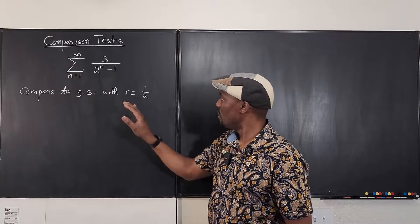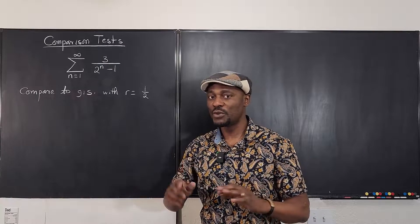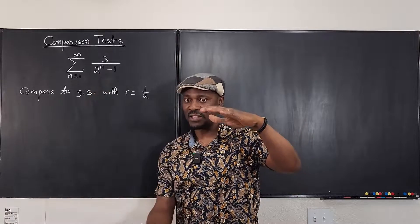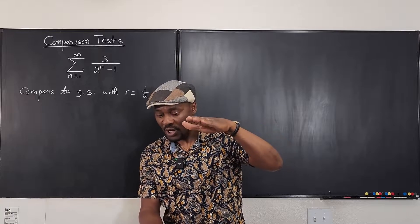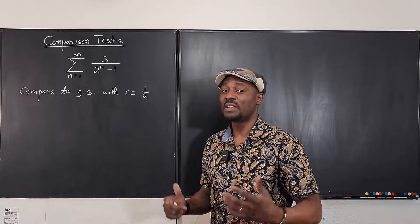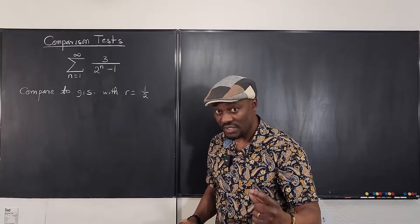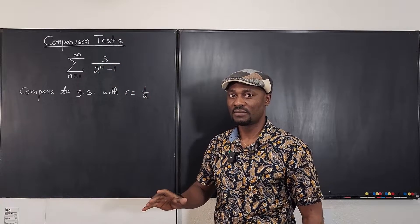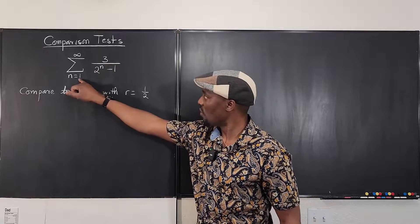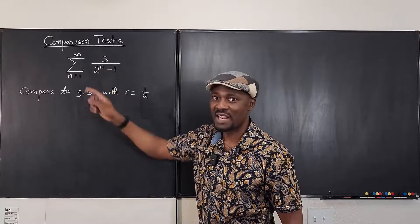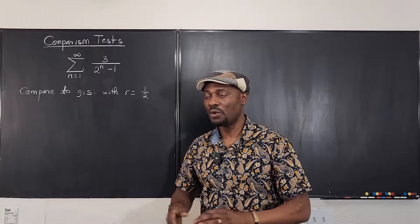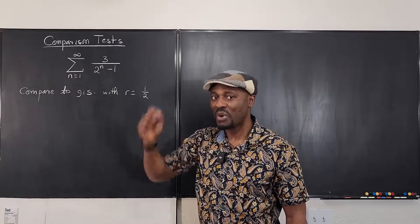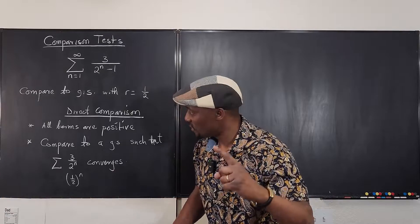So you want to do a comparison to the geometric series, and you want to make sure that the series you're comparing to is above your series — it has to be under the known convergent series so that it gets compressed to convergence. The first condition that has to be met is that all the terms in this series must be positive. As n goes from 1, 2, 3, all the values you get must be positive. Before you start any comparison test, the terms must be permanently positive.